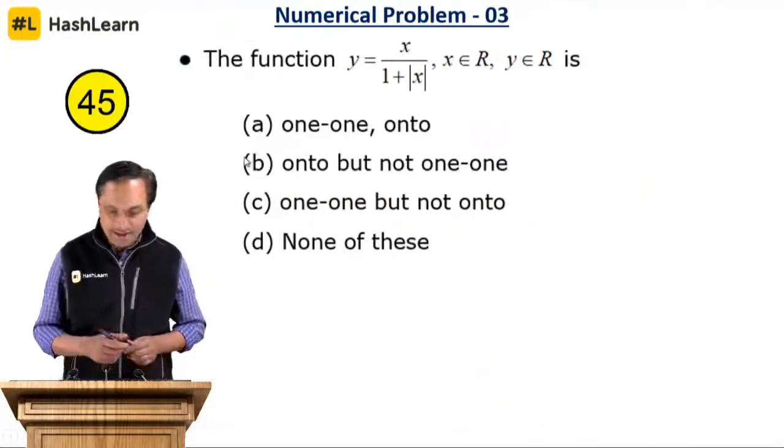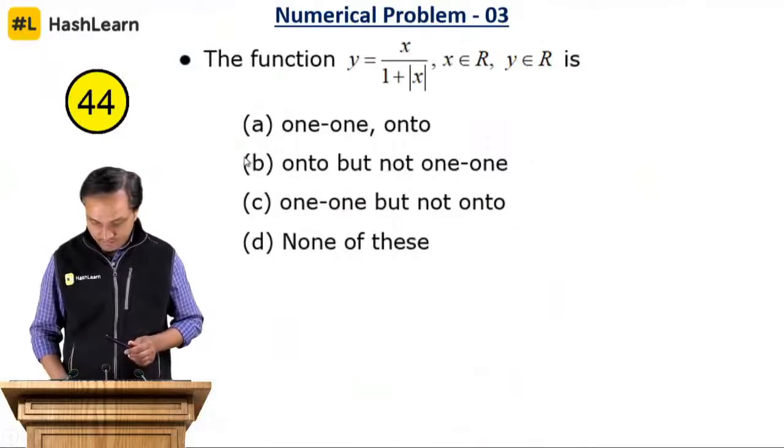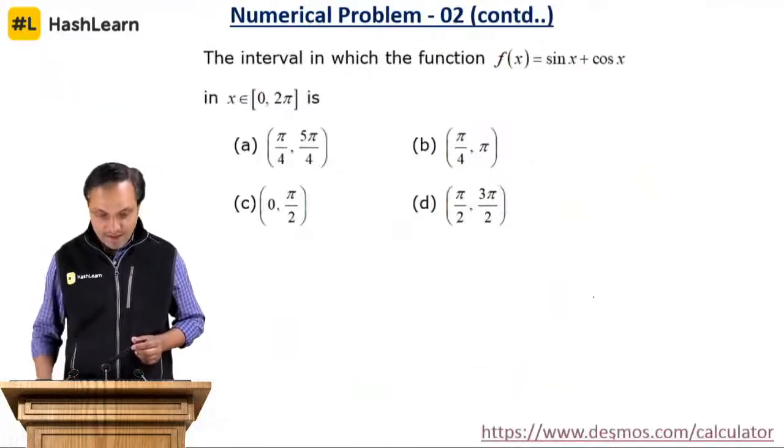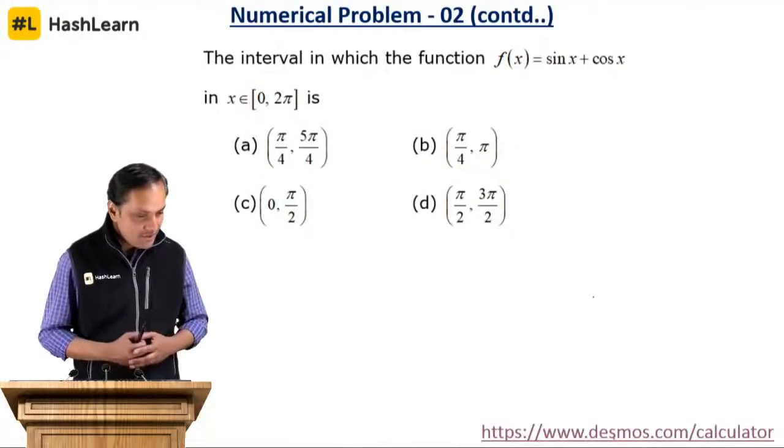Is it clear? Amit, Ananya, Arshad — kindly respond. Your answer is option A — pi by 4 to 5 pi by 4.